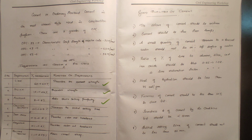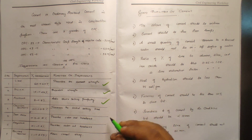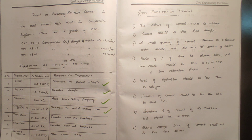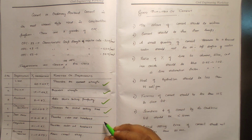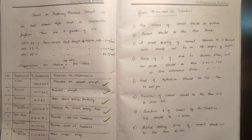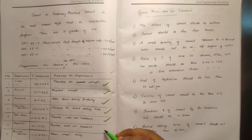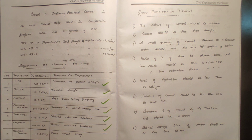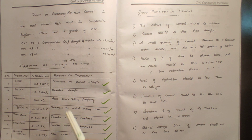Calcium sulfate makes up 0.1 to 0.5% and increases the initial setting time of cement. Iron oxide makes up 1 to 2.75% and provides color and hardness, making cement strong. That covers the ingredients of cement and their uses and functions.